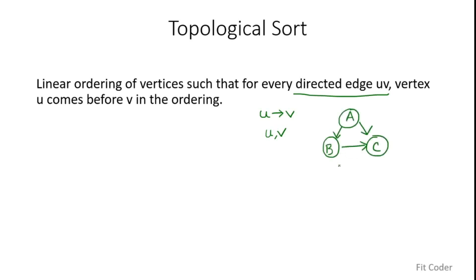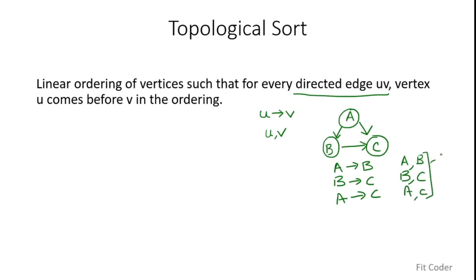Let's say we are given this graph and we have to find its topological sort. There is a directed edge from a to b, a directed edge from b to c, and a directed edge from a to c. This means a should come before b, b should come before c, and a should come before c. So the topological sort of the graph will be a, b, c because it satisfies all these properties.